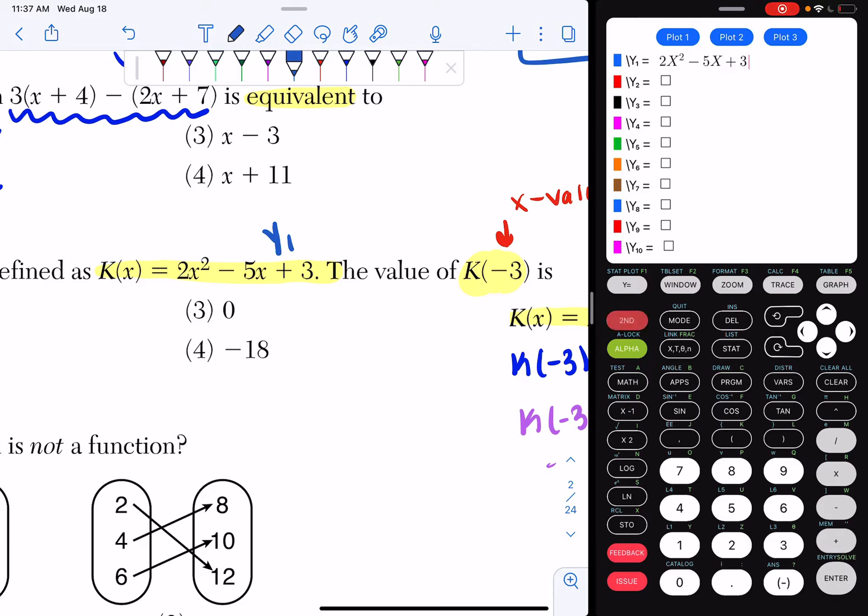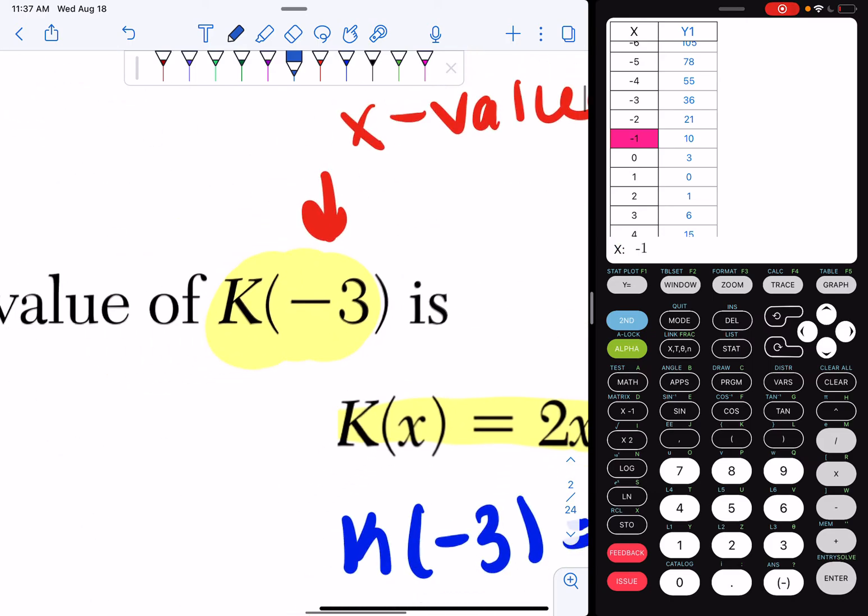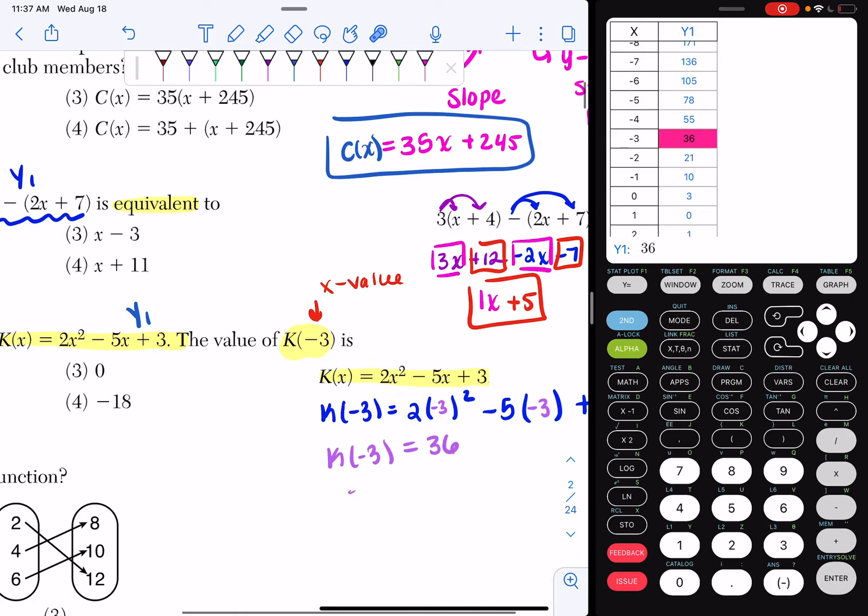Now I'm going to hit second graph, and I care about what happens at x equals negative 3. So I'm going to scroll up to negative 3. And if I look, I get 36. And boom, that's another way I could have gotten that answer.